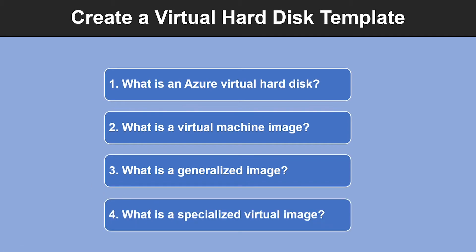And finally, what is a specialized virtual image? A specialized virtual image is a copy of a live virtual machine after it has reached a specific state. For example, a specialized image might contain a copy of the configured operating system, software, user accounts, databases, connection information, and other data for your system. You can use a specialized virtual image as a backup for your system at a particular point in time, and if you need to recover after a catastrophic failure or roll back the virtual machine, you can restore from this image as well.